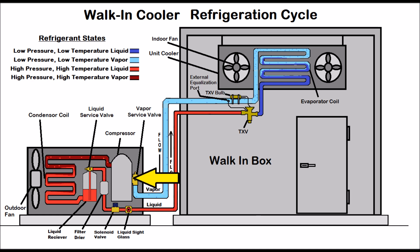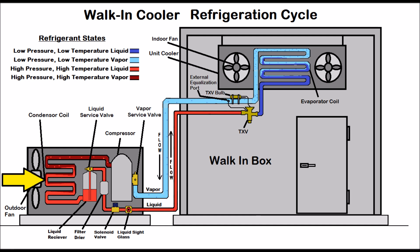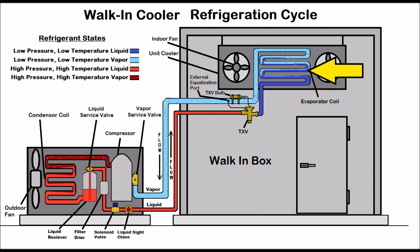So that's how it works — you're absorbing heat from inside the walk-in box and rejecting it outside. The liquid receiver is there because of the varying temperature load inside the walk-in box. You need more refrigerant when it's really hot inside and less when it's colder, so the liquid receiver stores the sub-cooled liquid refrigerant. Without a liquid receiver, liquid would be stored in the outdoor condenser coil, limiting the space available for the saturated state. The saturated state is where most of the energy is rejected out of the refrigerant and into the outside air, so having a large saturated state in both the evaporator and condenser coils is crucial.